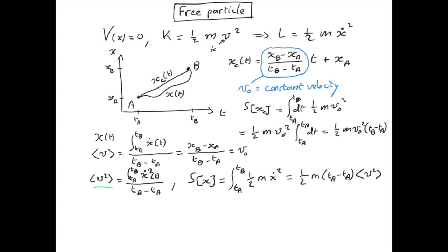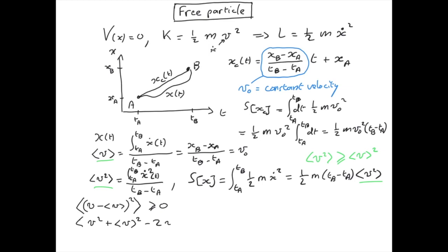Now what I want to show is that the average of v squared is always greater than the average of v, if I were to square it. To show that, we start with the fact that the square of (v minus the average of v) has to be greater than zero, because it's a square. Now if we take the average of that, it also has to be greater than zero. Expanding the square, we get the average of v squared plus the average of v squared minus 2v times the average of v.